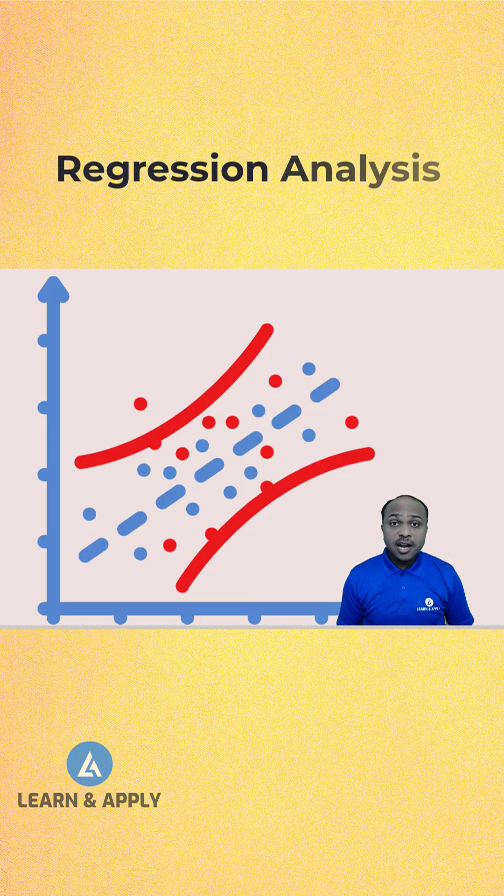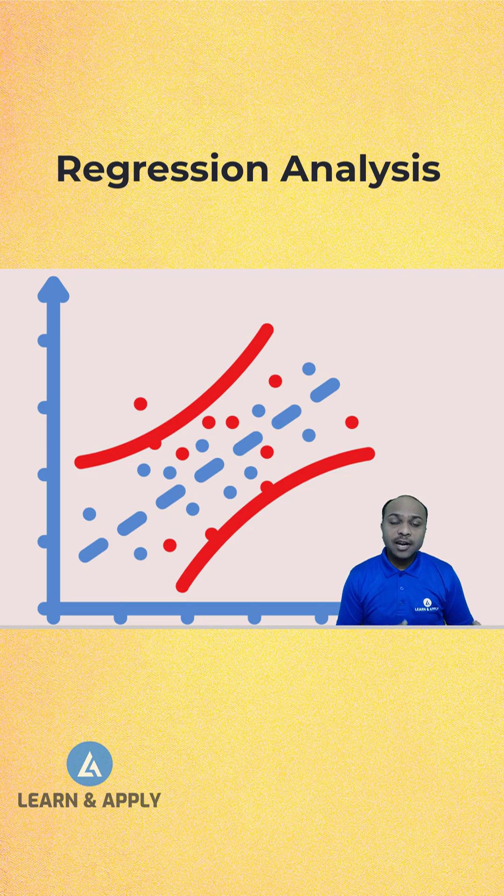In regression analysis, in addition to seeing what is the strength of relationship, we can also understand what is the portion of variation in the second variable that can be explained by the first variable.